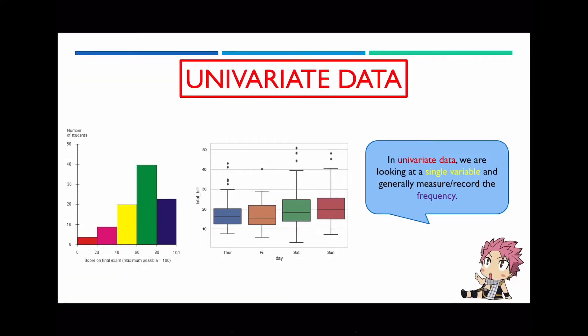What I want to show you is that currently, up to date, we've been looking at univariate data, and these examples include histograms, dot plots, stem-leaf plots and box plots. They're considered to be univariate data because we're only really looking at one single variable, and what we generally do in these types of graphs is we just measure or record the frequency. As you can see in this histogram, this is the variable I'm looking at — the scores on my final exam — and I'm recording its frequency, grouping them into class intervals.